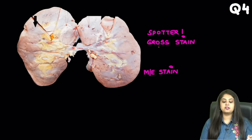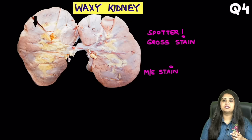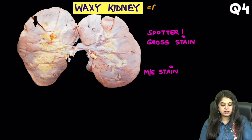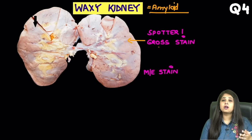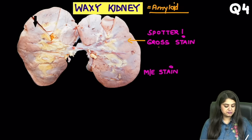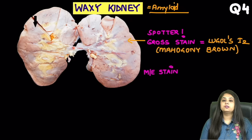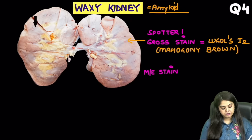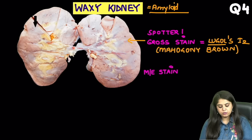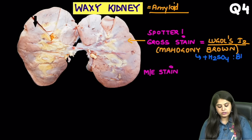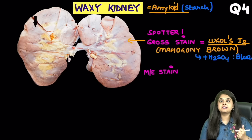Moving on to question 4, another gross appearance from the kidney — a classical spotter requiring no history. This is the only picture available on the internet of a waxy kidney. Whenever we use the word waxy, we are talking about amyloidosis. The PYQ asked here is about the gross stain. Don't mark Congo red everywhere when you read amyloid — the question asks for a gross stain, meaning what can I put on top of this kidney specimen. The answer is Lugol's iodine, which gives a mahogany brown colour. In some NEAT PG exams it is further asked that when you add sulphuric acid on top of the mahogany brown, you get a bluish colour, showing amyloid has properties similar to starch — that's why it stains with iodine.